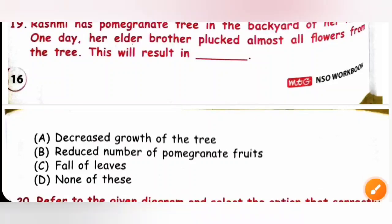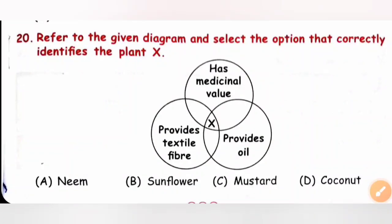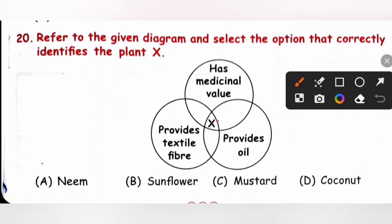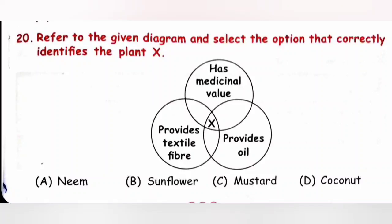Twentieth, refer to the given diagram and select the option that correctly identifies the plant X. X is a plant which has medicinal value, provides textile fibers and provides oil. Option A: neem, it has medicinal value and provides oil but doesn't provide textile fiber. Sunflower also provides oil but doesn't provide textile fiber. Coconut has medicinal value, provides oil and also provides textile fiber. So option D, coconut is the correct answer.